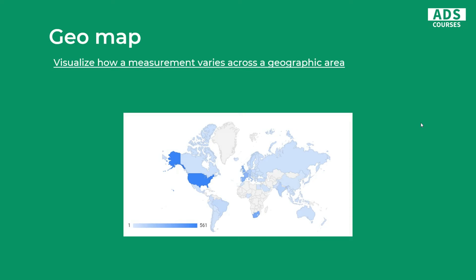Next one is geomap, which simply visualizes how a measurement varies across a geographic area. It could be a worldwide map, or it could be a continent, country, or even a region.